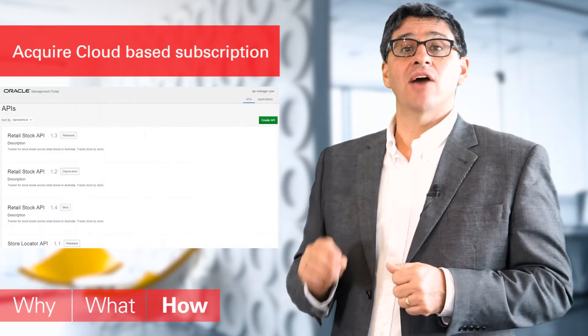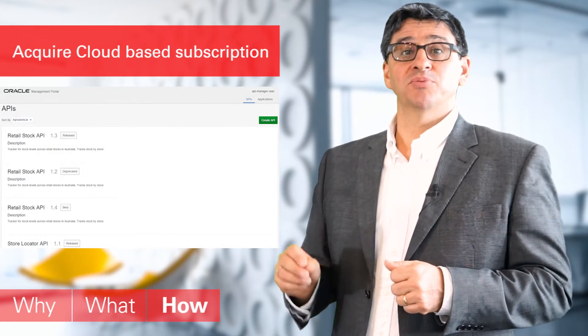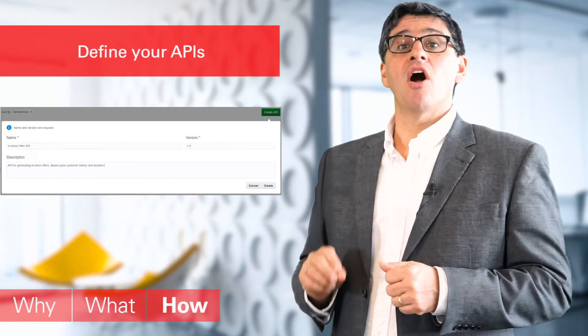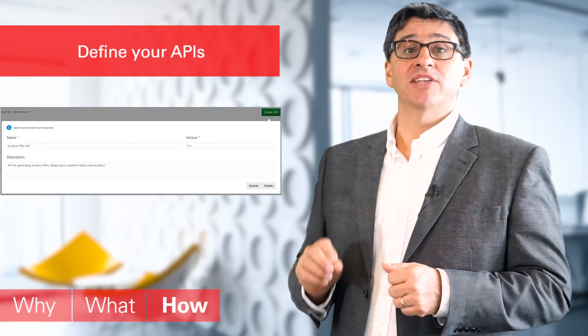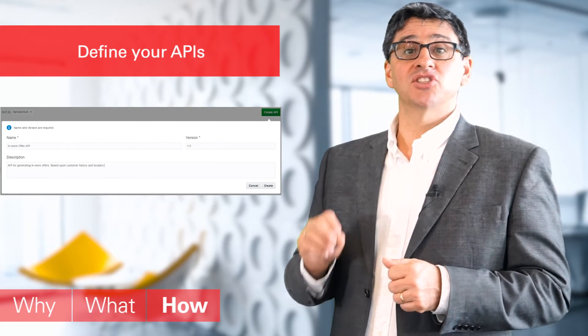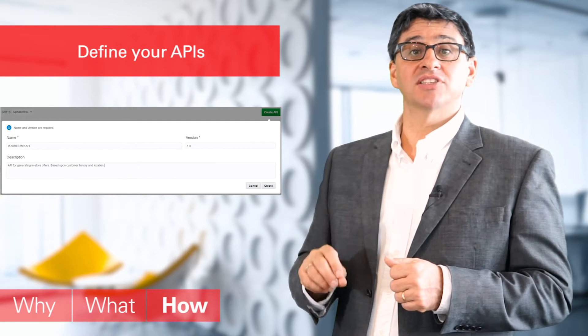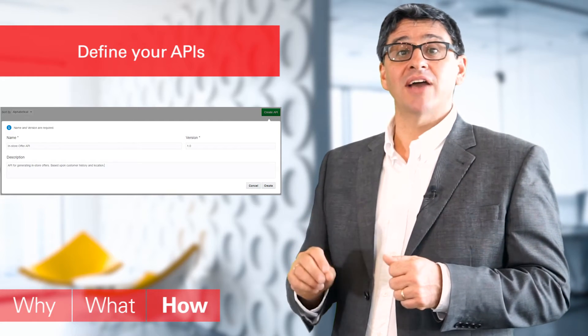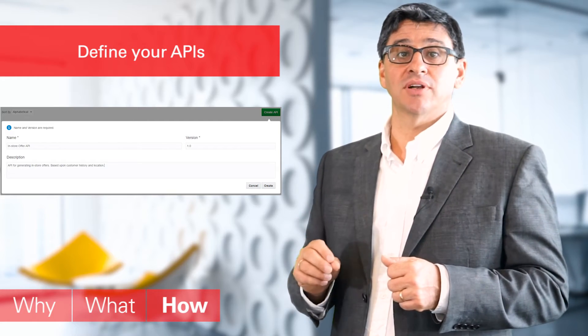How does it work? There are six steps. Firstly, acquire your cloud-based subscription. Secondly, define your APIs with endpoints, security policies, throttling, scripting behavior, routing, etc.